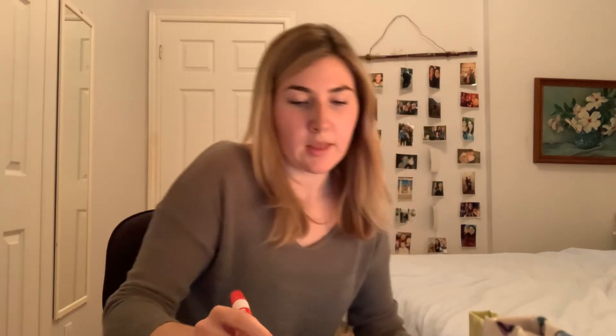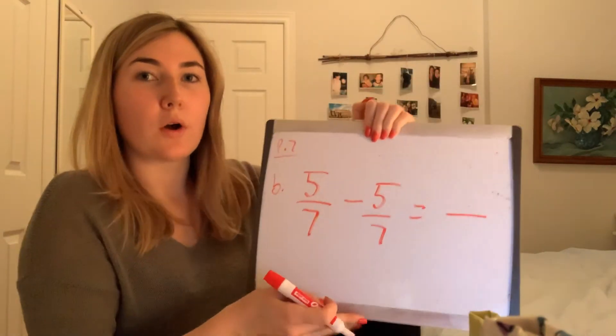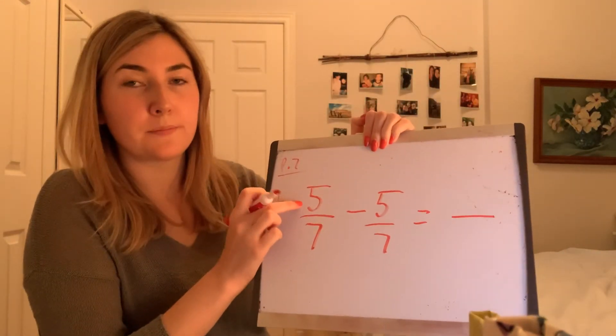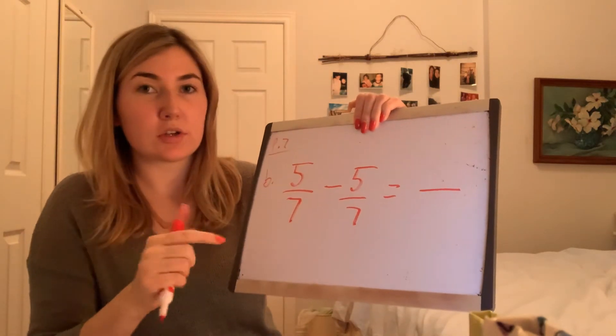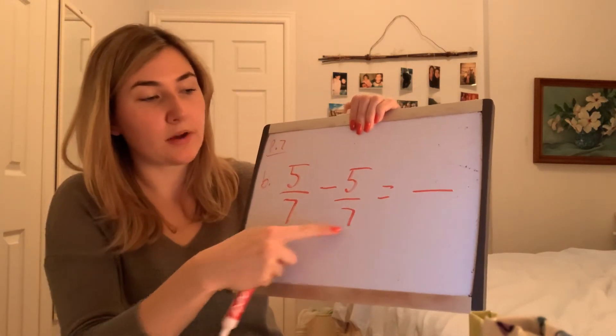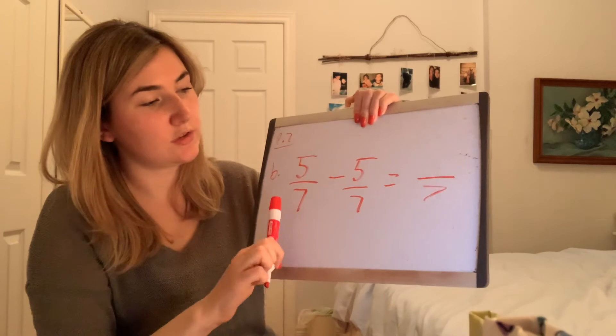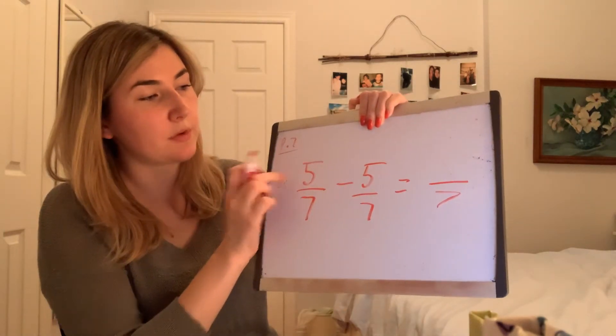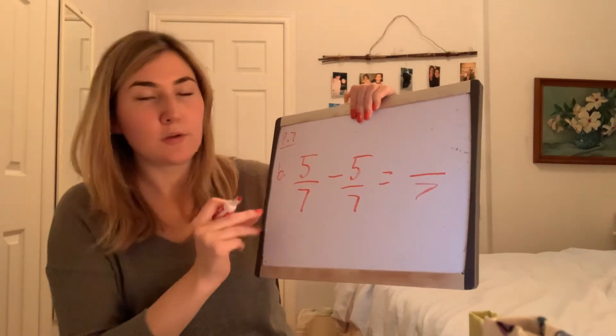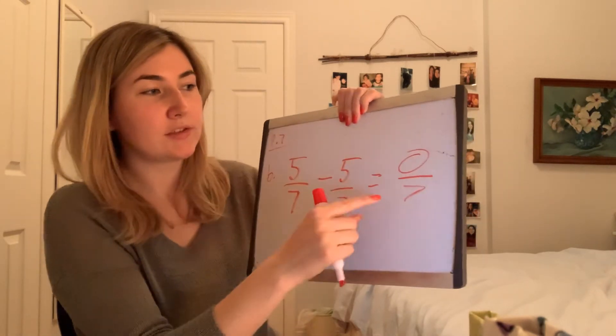In B we're subtracting: 5 over 7 minus 5 over 7. When we're adding or subtracting, we're only going to change our top number. We always need to make sure we have the same bottom number, which we do — it's 7. So I'll write down 7 for our answer since I know it'll stay the same. We only change the top: 5 minus 5 equals 0. So our answer is 0 over 7.